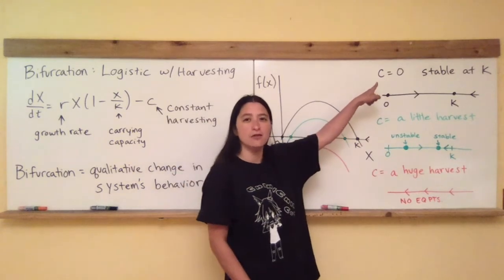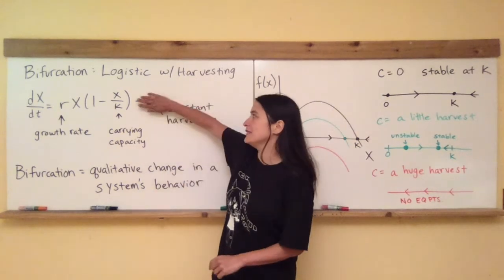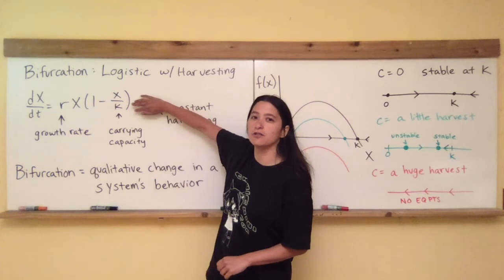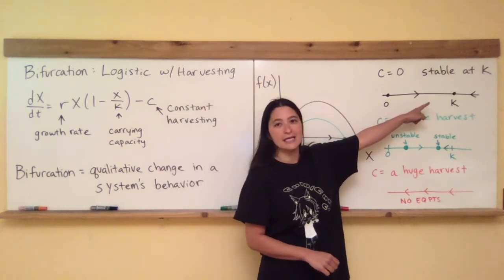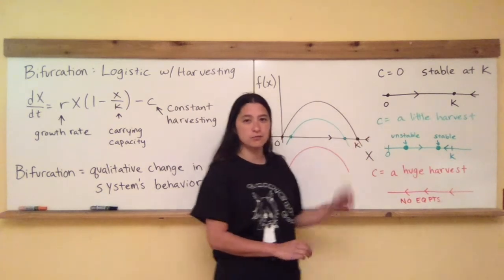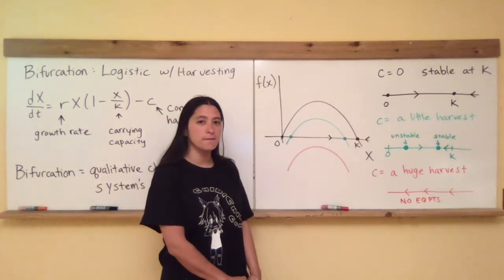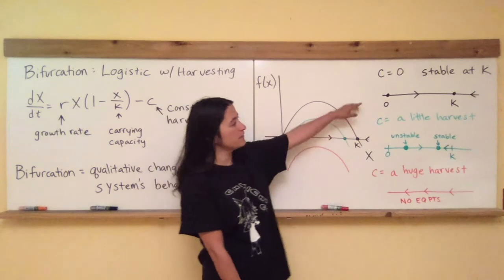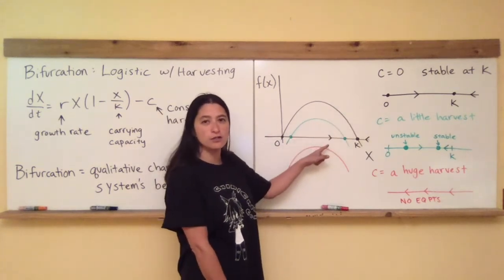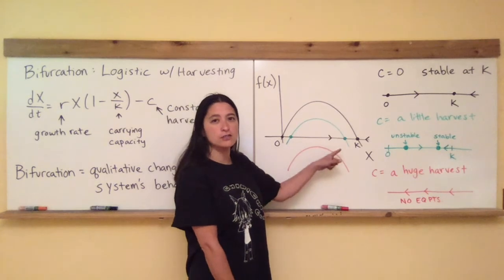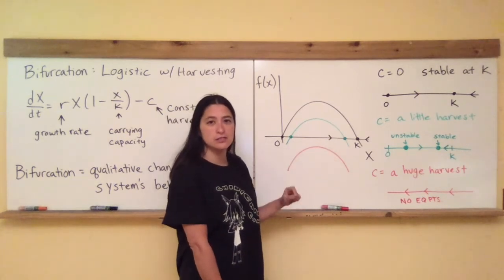So if c is equal to zero, remember that if this isn't there, we have our usual logistic behavior, where we have a stable equilibrium point located at k and an unstable equilibrium point located at zero. And remember that the phase lines that I'm drawing here are equivalent to drawing those arrows on the horizontal part of a tangent versus state space axis.